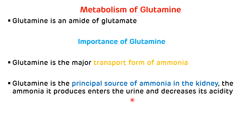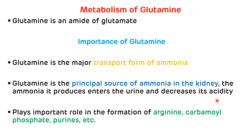The third important thing regarding glutamine is it plays an important role in the formation of arginine, carbamyl phosphate, and purines by donating the nitrogen or amino group. To summarize, the main importance of glutamine is it is the major transport form of ammonia, and it also plays an important role in the formation of arginine, carbamyl phosphate, and purines.